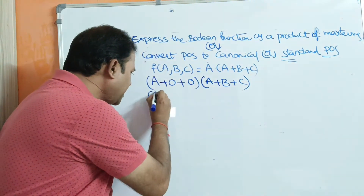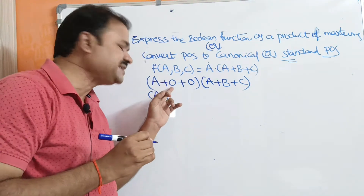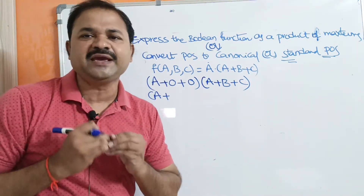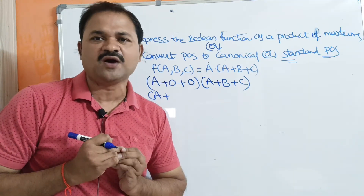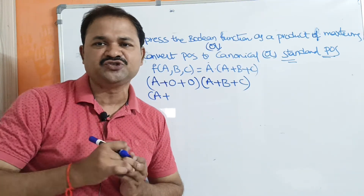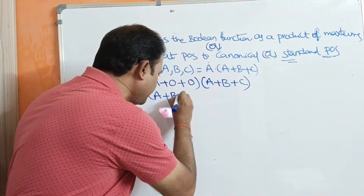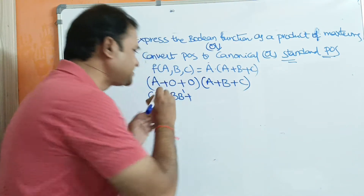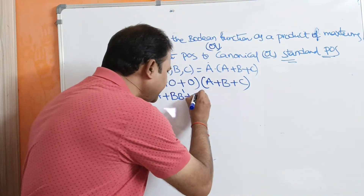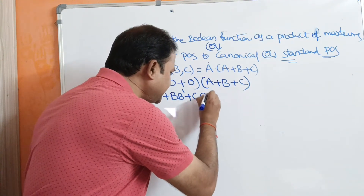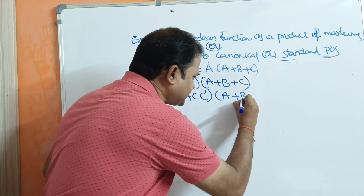In order to obtain b, replace the 0 by b·b'. Why? Because we have the formula a·a' = 0. So replace this 0 by b·b'. Likewise, in order to obtain c, replace this 0 by c·c'. Then write the next term as it is.